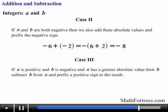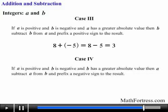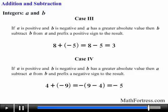If a is positive and b is negative and a has a greater absolute value than b, subtract b from a and prefix a positive sign to the result. For example, 8 plus negative 5 will be equal to 8 minus 5, which is equal to 3. If a is positive and b is negative and b has a greater absolute value, then subtract a from b and prefix a negative sign to the result. For example, 4 plus negative 9 is equal to 9 minus 4, which is equal to 5, and then we prefix the negative sign.